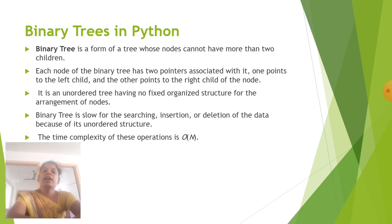Binary trees in Python. Binary tree is a form of tree whose nodes cannot have more than two children. Each node of the binary tree has two pointers associated with it. One points to the left child and the other points to the right child of the node. It is an unordered tree having no fixed organized structure for the arrangement of nodes. Binary tree is slow for the searching, insertion or deletion of the data because of its unordered structure. The time complexity of these operations is order of n.